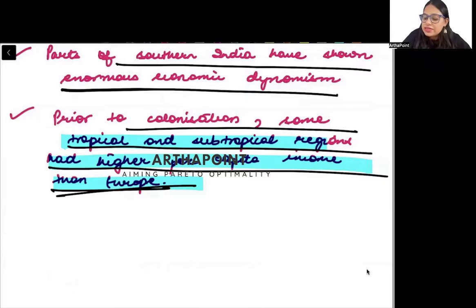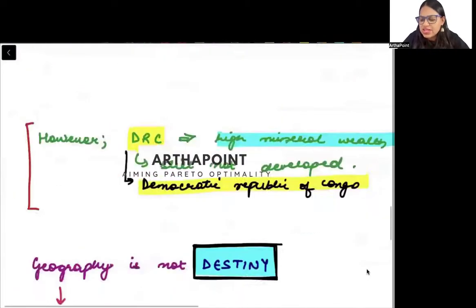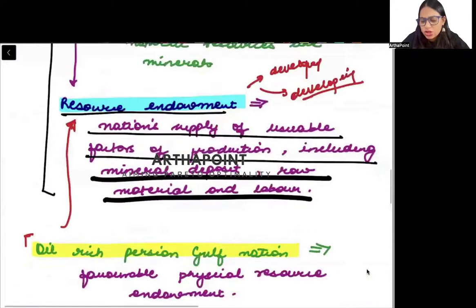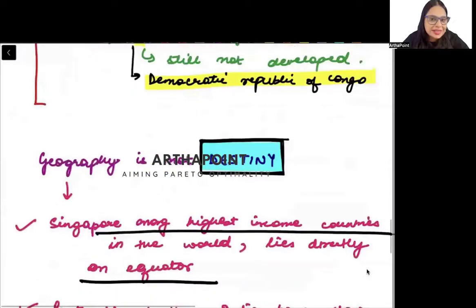So just being in a tropical or subtropical region does not mean you will not grow. This pattern has been observed in many countries, but remember — this is not destiny and it does not finalize anything.